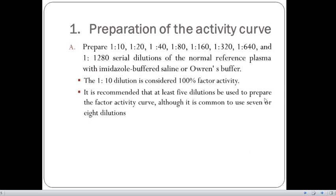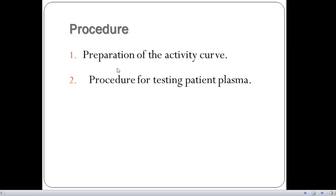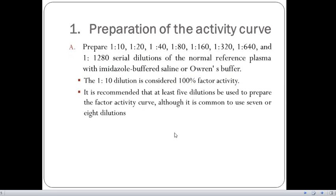For preparation of the activity curve, I want you to note the numberings here. First we have to prepare 1 is to 10, 1 is to 20, and then so forth to 1 is to 1280 dilutions of the normal reference plasma with imidazole buffered saline or Owren's buffer. The 1 is to 10 dilution is considered as the 100% factor activity. And it is recommended that at least 5 dilutions be used to prepare the factor activity curve.